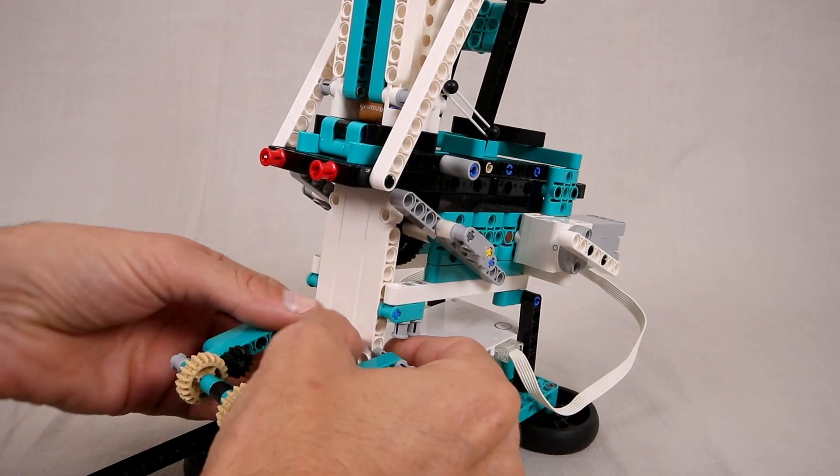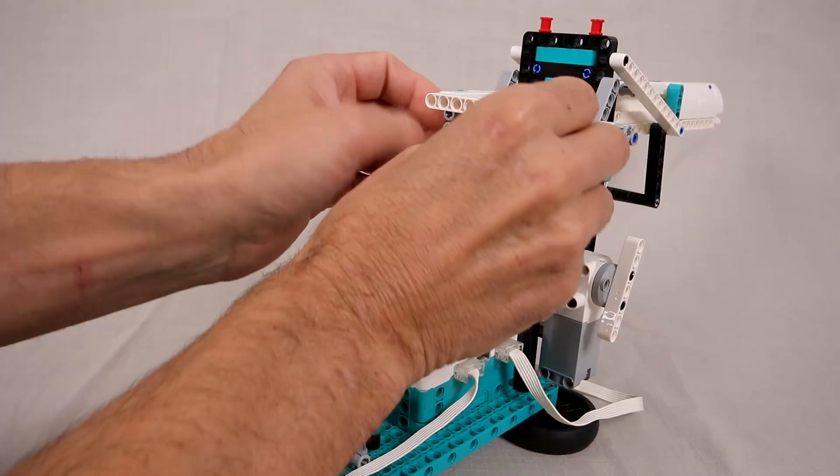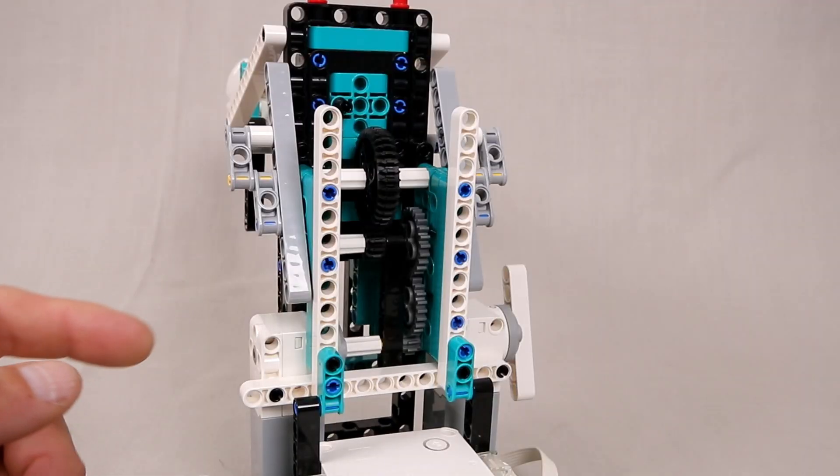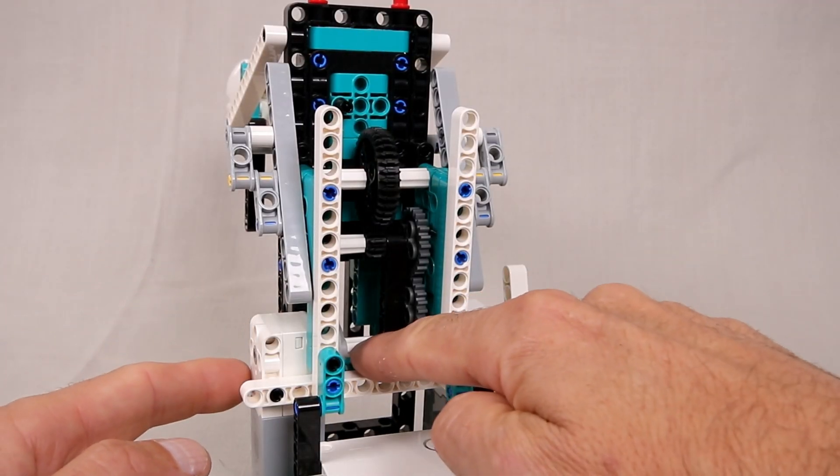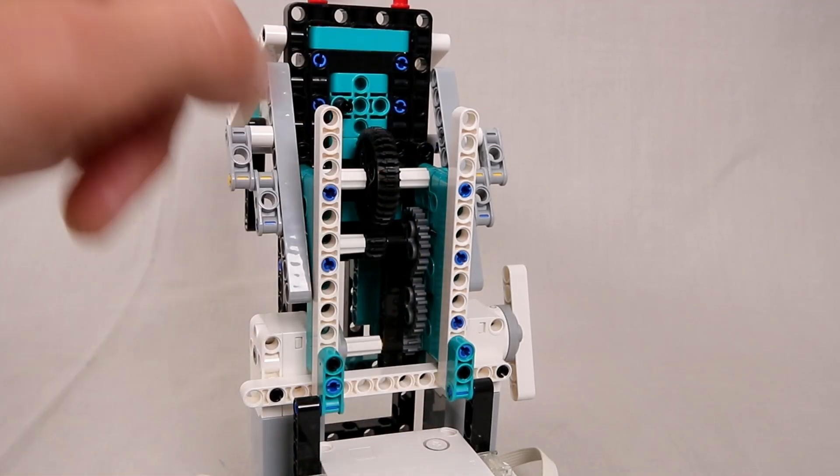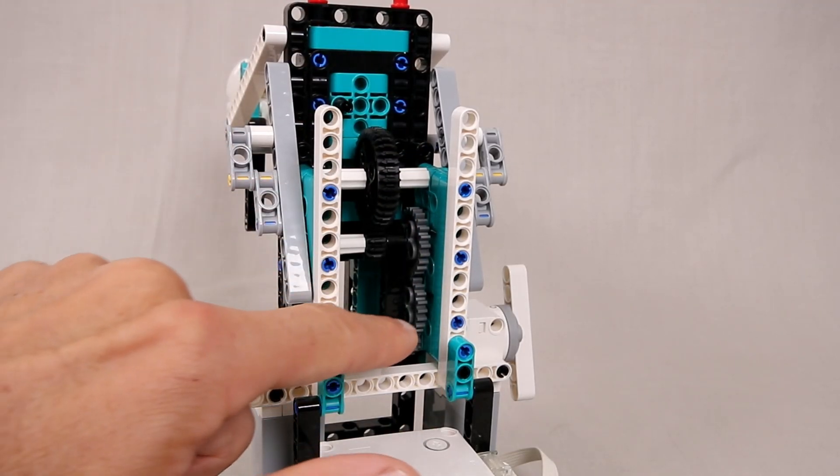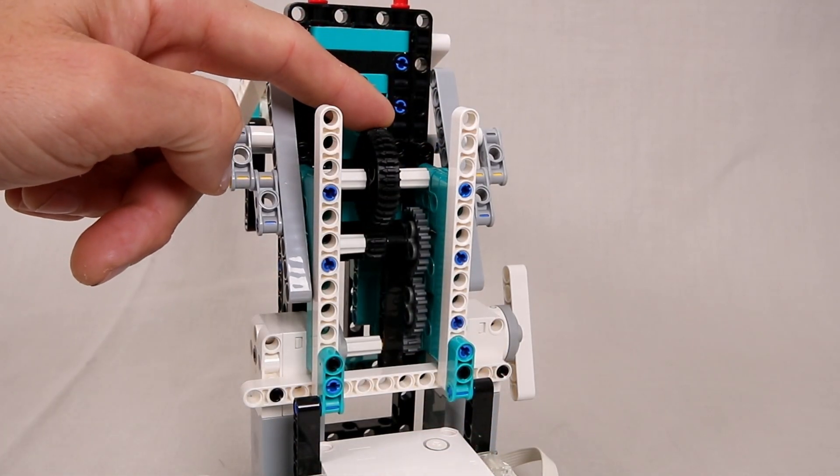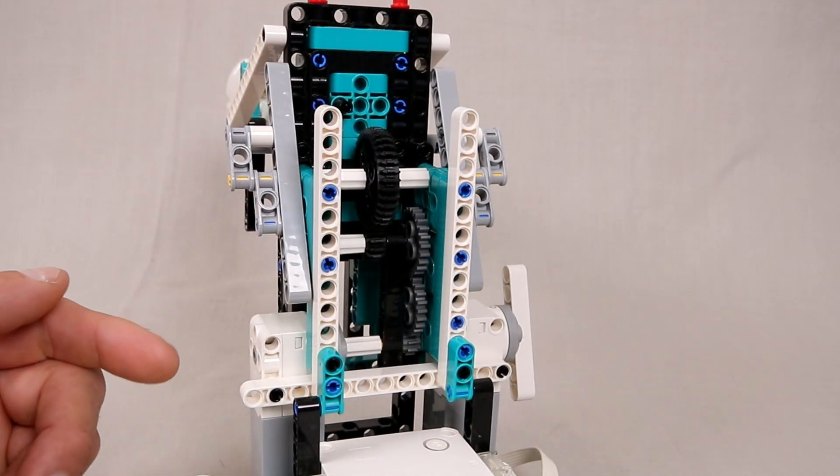They are also geared down quite a bit. If we take a look at the inside we can see that both motors drive the same drive axle which transfers power through these gears to the launch arms and there are two 3 to 1 gear reductions in this gear train.